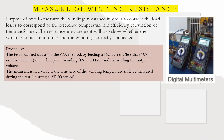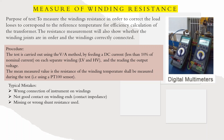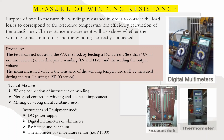The windings tested are LV (low voltage) and HV (high voltage), reading the output voltage. The main measured value is the resistance of the winding; temperature shall be measured during the test using a PT100 sensor. Typical mistakes include wrong connection of instrument, winding not having good contact at winding ends, and missing or wrong shunt resistance. Instruments used: DC power supply, digital multimeter or ohmmeter, shunt, thermometer, and temperature sensor.